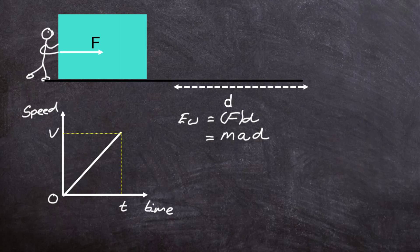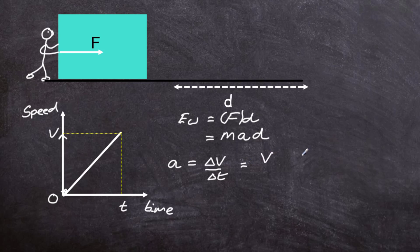We can find both expressions from the speed-time graph. Working out the acceleration is quite simple. The acceleration equals the change in velocity divided by the time taken for that change. Going from zero up to V, the change in velocity is V metres per second, divided by the time T seconds. So the acceleration is V divided by T. We can substitute A with V divided by T.